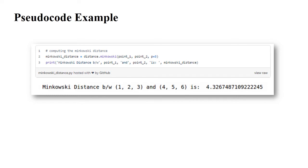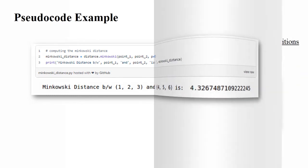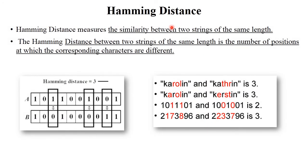The last one is Hamming distance. Hamming distance is generally used to find the similarity between two strings of the same length. The requirement is that both strings must have the same length — if two strings have different lengths, this model is not applicable. So the key requirement is: similarity between two strings having the same length.